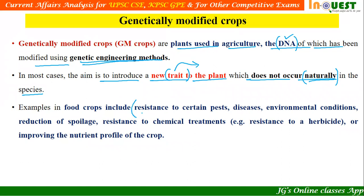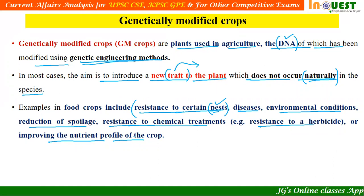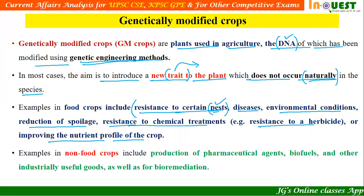The purposes of genetic modification in plants include: increasing resistance towards certain pests and diseases, making plants resistant towards environmental conditions, reducing spoilage, increasing resistance towards chemical treatments such as herbicides, and improving the nutritional profile of crops. Genetic modification is also used in non-food crops — for example, production of pharmaceutical agents, biofuels, other industrially useful medical goods, and bioremediation.